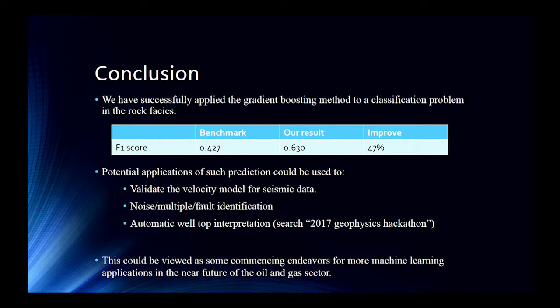In the end we got F1 score at 0.63, which is 47 percent improvement of the benchmark 0.427. So it's a small contest project, but I would say there are a lot of potential applications of this prediction. We can use that to validate the velocity model for seismic data. We can also use that to help identify the noise, multiples, faults for the seismic image. And also it can help interpret well-top picks.